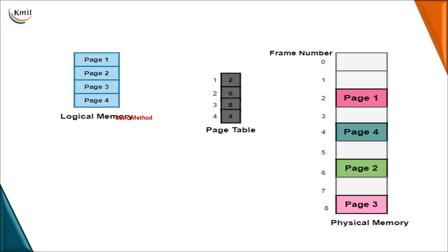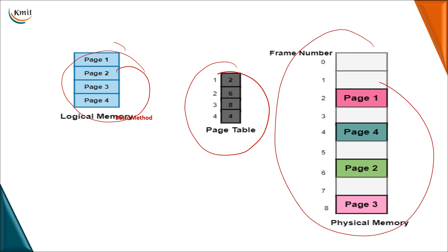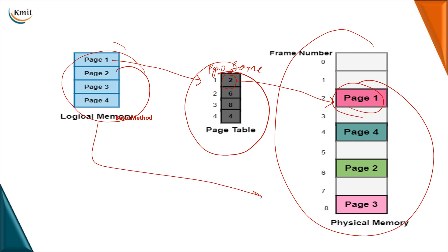To make this work you must maintain a logical memory, a page table, and a physical memory. When you want data for page 1 in logical memory, it interacts with the page table. The page number maps to a frame number — these two together form the page table entry. Once you know the frame number, you go directly to that frame in main memory and access the page. This is how you map logical addresses to physical addresses.